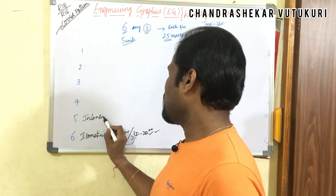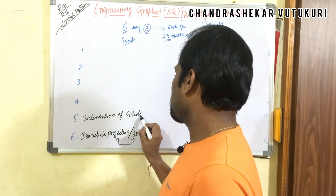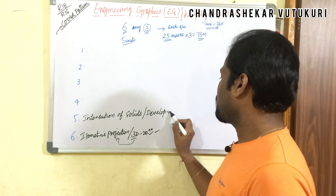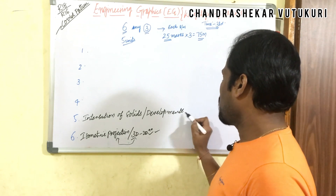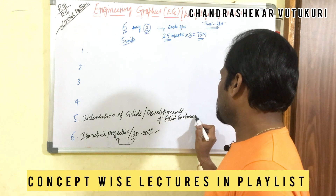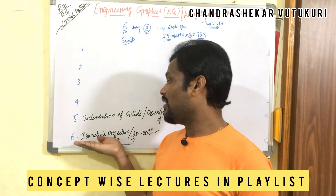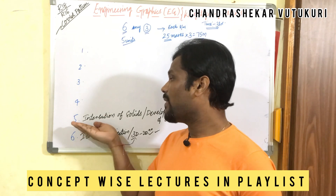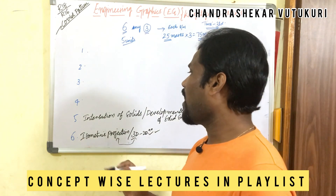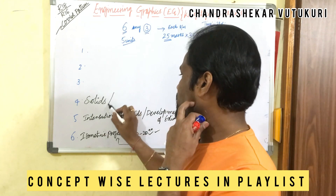The fifth question is all about intersections of solids, or sometimes they ask developments of solid surfaces. Make sure to be perfect with these concepts. We can expect one direct question from here for 25 marks, but the fifth question may also come as a combination split of part A and part B — for example a 10 and 15 mark combination.